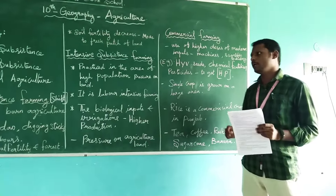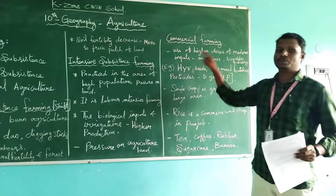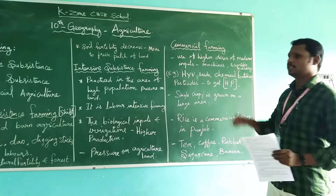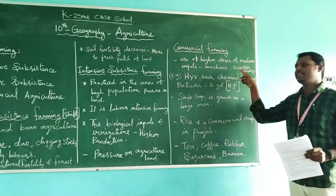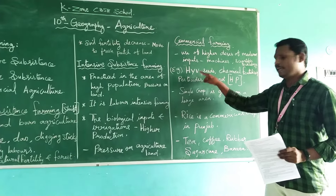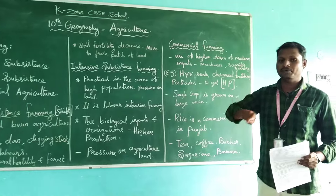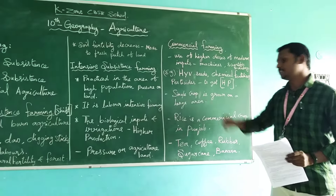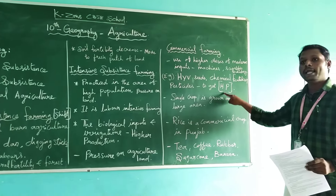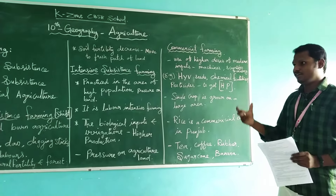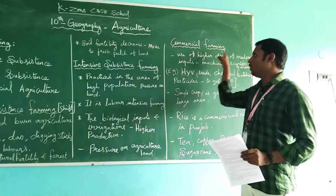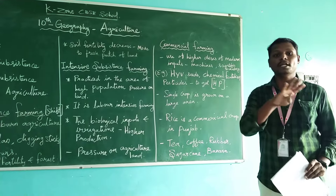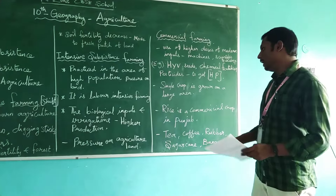The third type is commercial farming, which involves the use of high doses of modern inputs. This is the farming method we are now using in our country, involving machines and scientific technologies. For example, HYV — High Yield Variety — seeds, chemical fertilizers, and pesticides are used to get high production. In commercial farming, a single crop is grown over a large area; there is no multiple cropping in the same field.